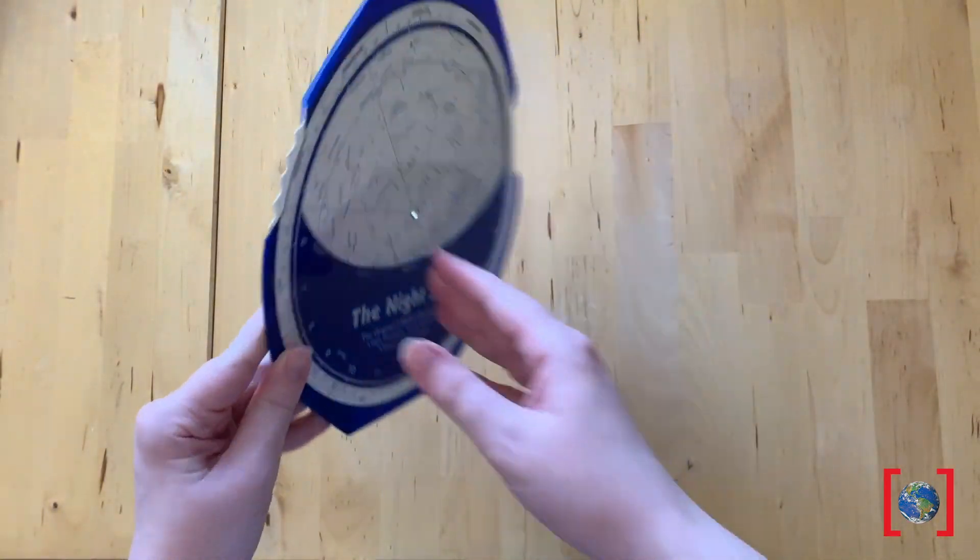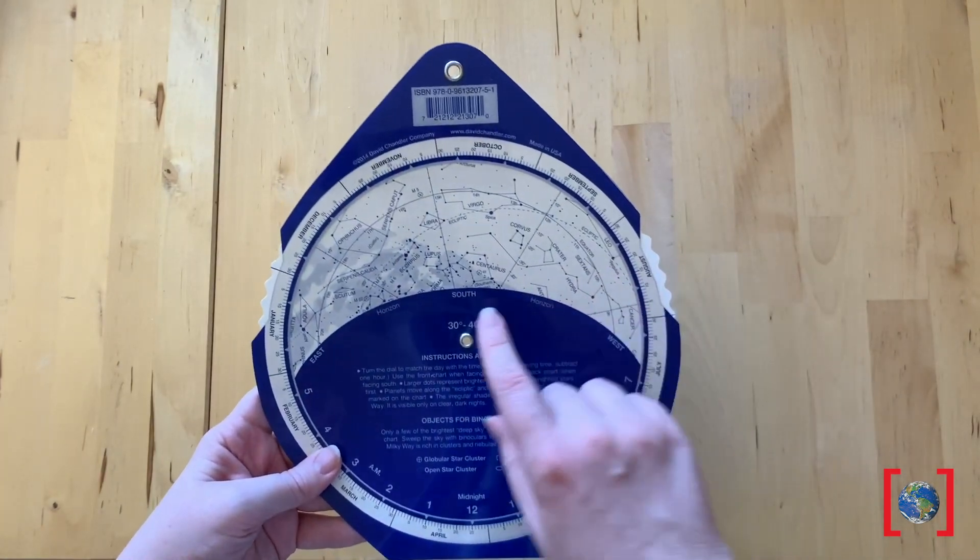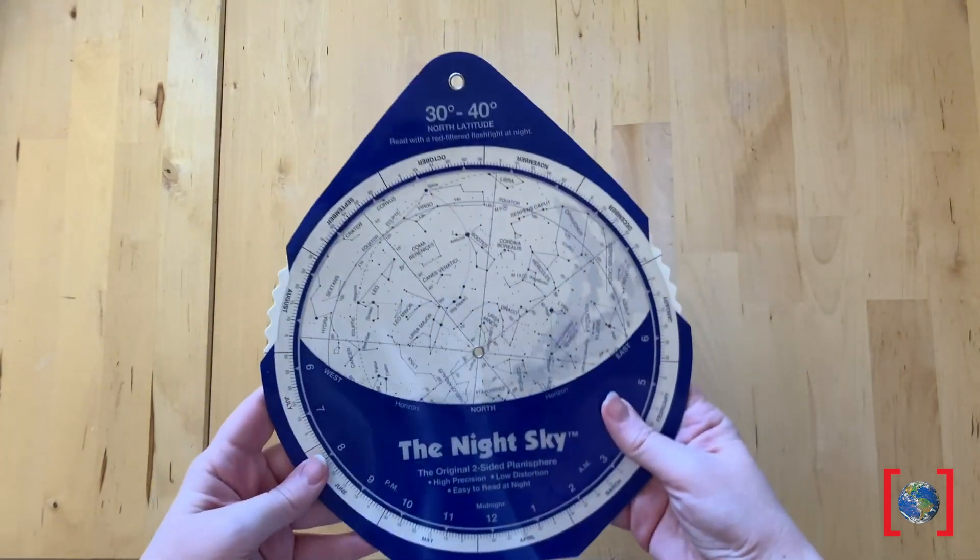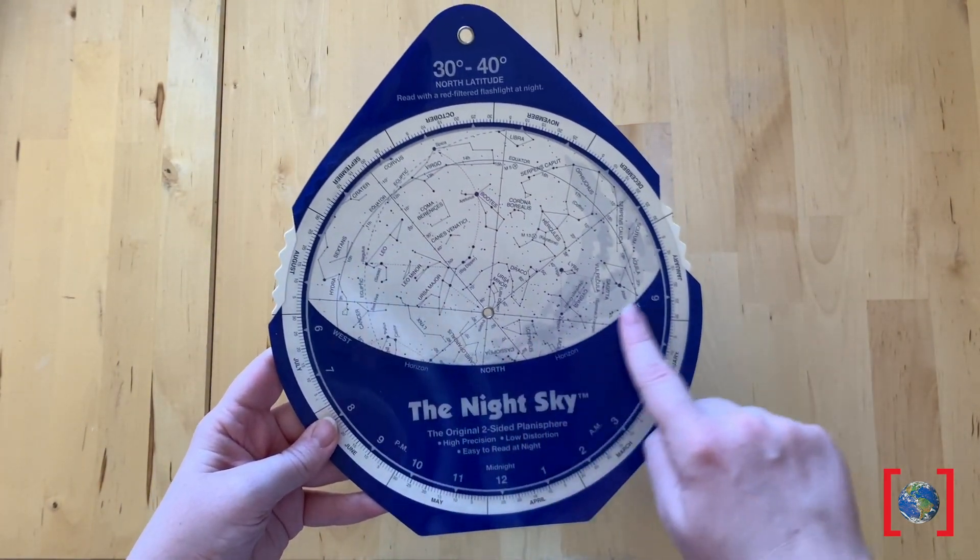Whether it's north or east or south or west, the window above will show you the stars in that part of the sky so that you can learn more about them.